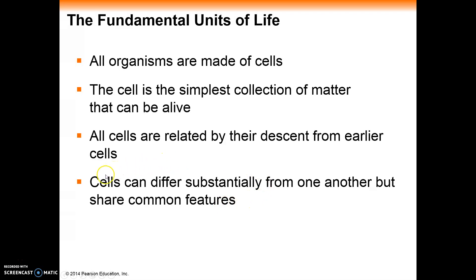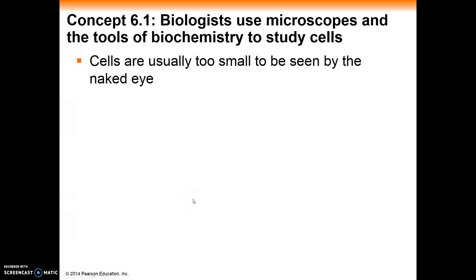Despite the fact that many cells can differ greatly from one another — even within our own bodies, looking at bone cells versus skin cells versus neural cells — they all share some common features. The first thing to consider is that cells are typically too small to be seen by the naked eye, though there are some exceptions. Human egg cells kind of approach where you might be able to see them with just a magnifying lens.